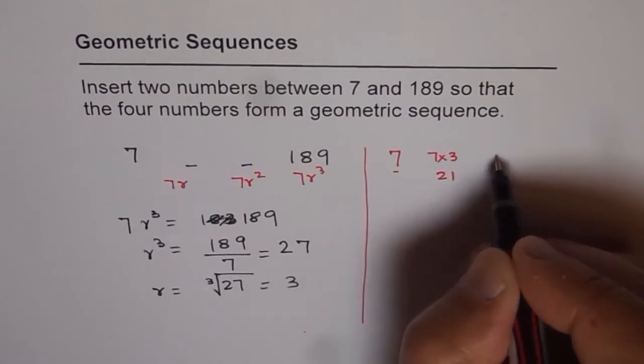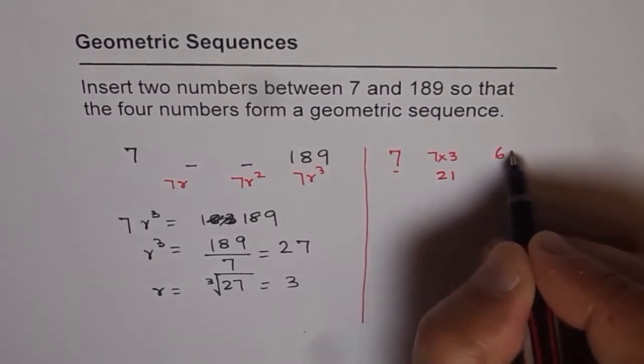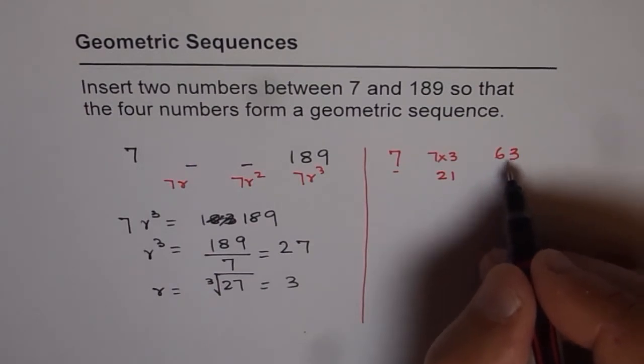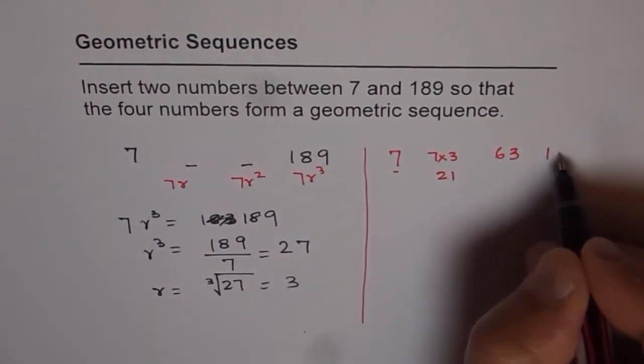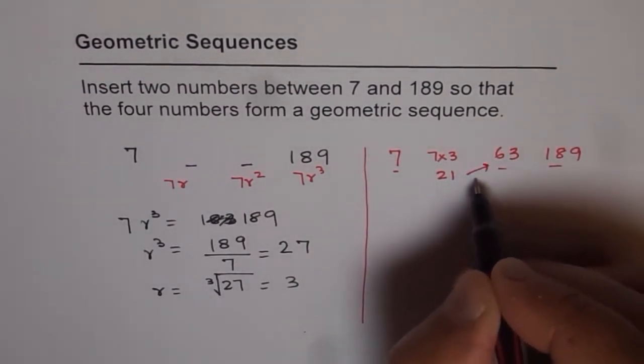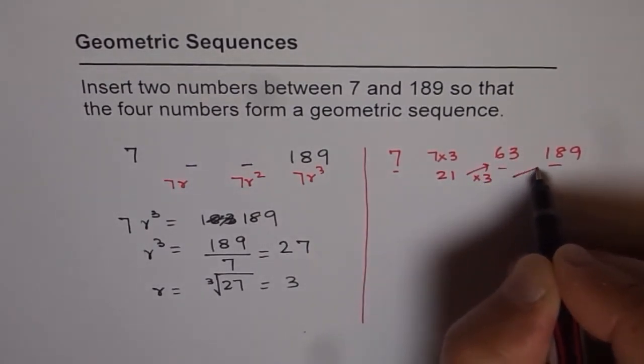So we get 21 times 3 is 63. And 63 times 3 is indeed 189. So that's how we get our numbers, times 3. So now we can write down our answer.